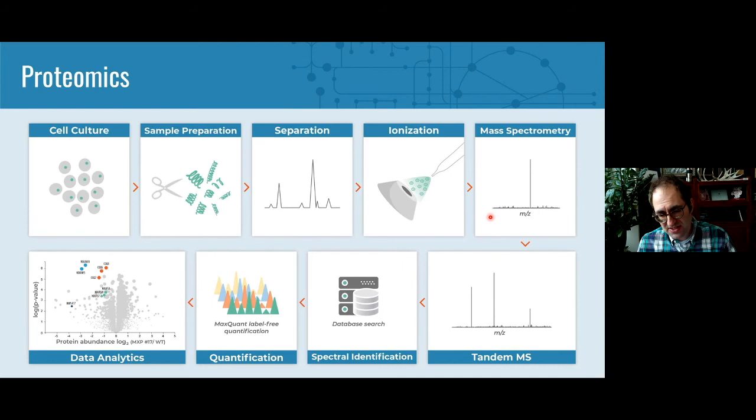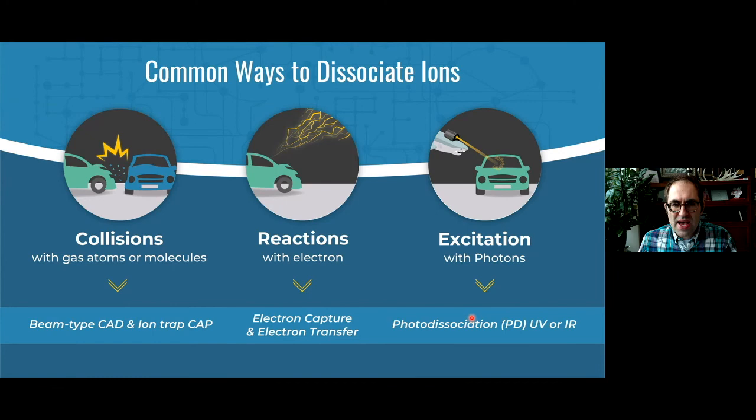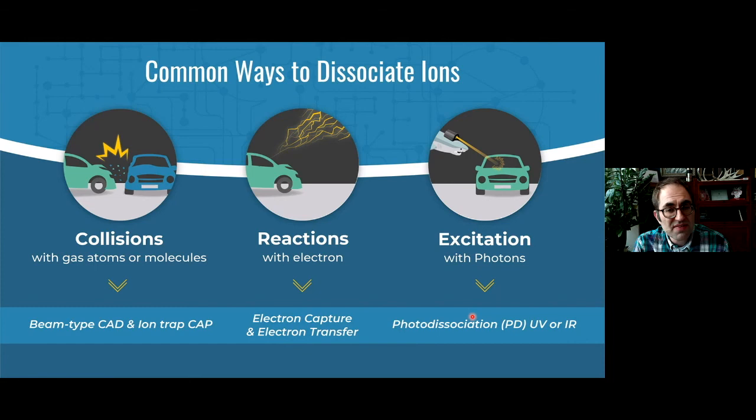Earlier you heard how the mass analyzer sorts out masses and makes measurements, and how it's critical to ionize the sample. Now we're talking about how we make them fall apart to get sequence information. There are three main ways to make an ion fall apart in a mass spectrometer: collisions, reactions with electrons, and bombardment with photons.